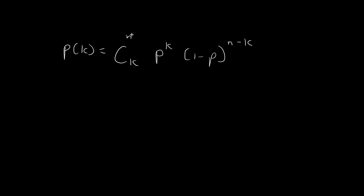For the binomial distribution with n trials and probability of success p, we want to consider the case where we have many, many trials and the probability of success for each trial becomes very, very small. We're interested in the constraint np equals some constant lambda, which means p equals lambda divided by n.